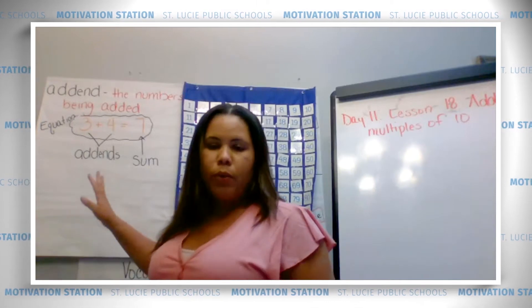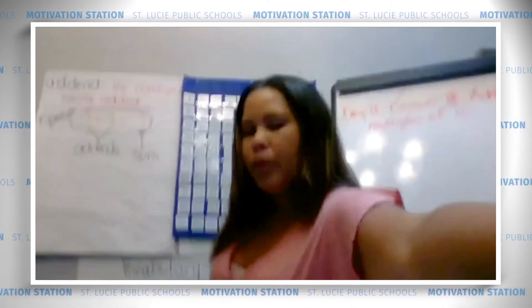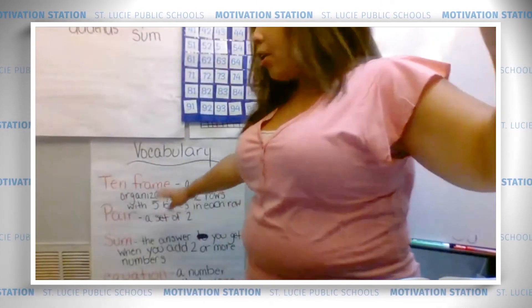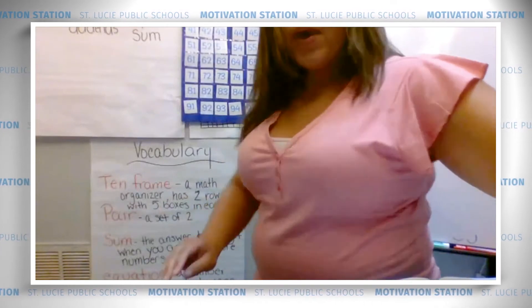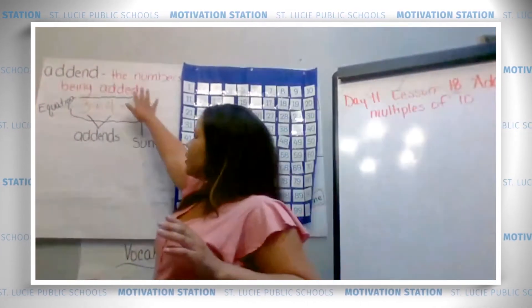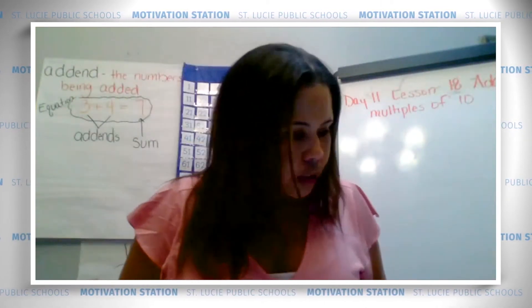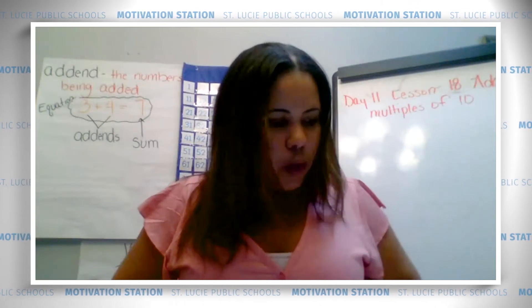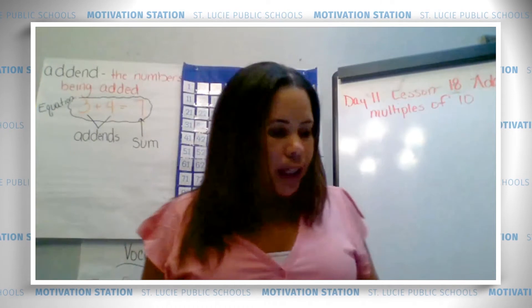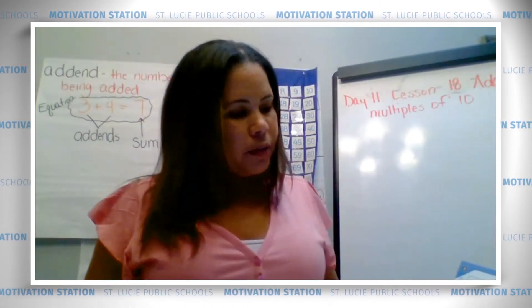I'm going to go back to our vocabulary for a while. We had lots of vocabulary words: 10 frame, pair, sum, equations, and then we added addends — these are all our addition words. I would like for you to turn in your workspace book to page 61. If you don't have it, go get it quick. I'll give you a few seconds. Page 61 in your workspace book.